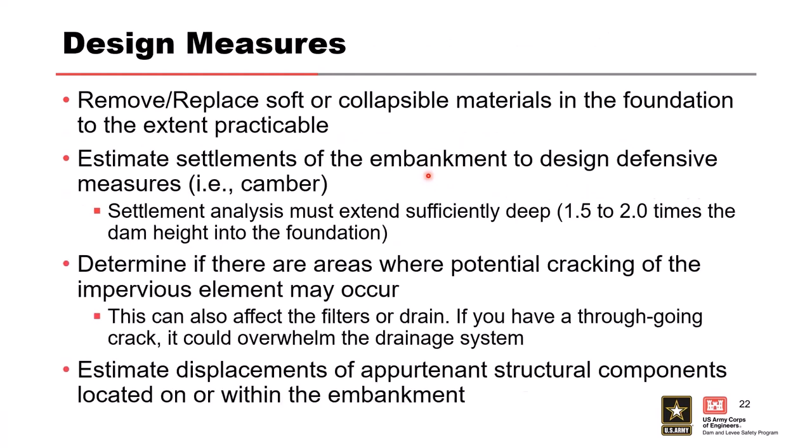For design measures: remove and replace is preferred for any significant outlier materials. When removal isn't possible, consider increasing the thickness of filters and drains to account for settlement. During the design phase, identify where potential cracking could occur. With risk-informed design, ask whether a potential through-going crack could develop and what design measures can mitigate it before it becomes a failure mode post-construction.